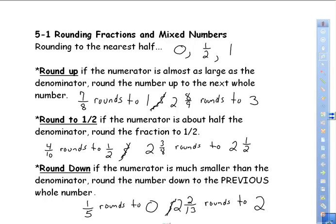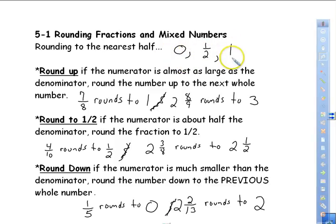We are rounding to the nearest half. The question today is rounding each number to the nearest half, so it's going to round to zero, one half, or one whole — which would be the next number on a mixed number.